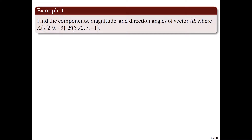Find the components, magnitude, and direction angles of vector AB, where A is the point (√2, 9, −3) and B is the point (3√2, 7, −1).